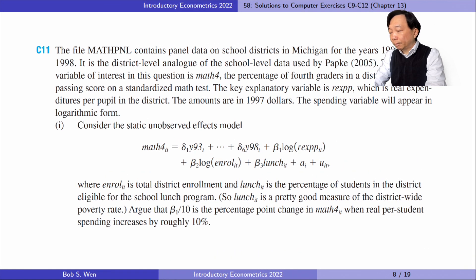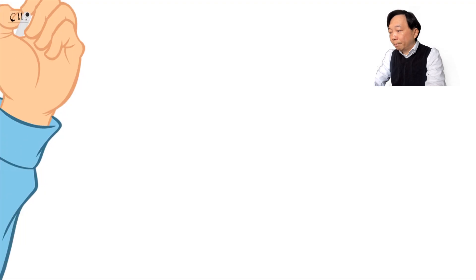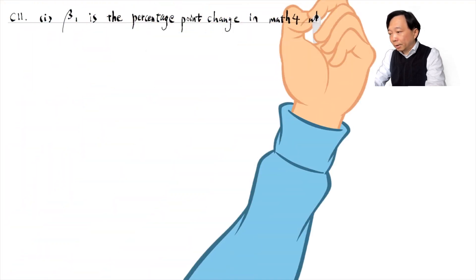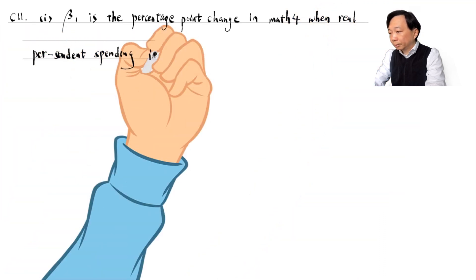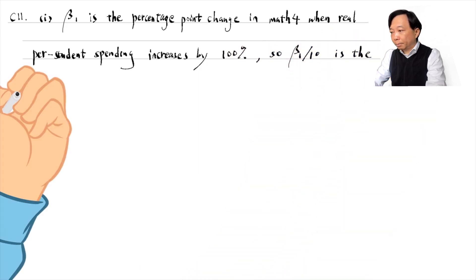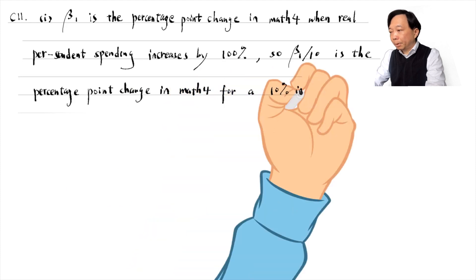Let's do computer exercise 11. In part 1, we consider the static unobserved effects model and argue that beta 1 over 10 is the percentage point change in math 4 when per student spending increases by roughly 10%. The outcome variable is the percentage of students receiving a passing score on the math test. The explanatory variable is in logarithmic form, so beta 1 is the percentage point change in math 4 for a 10% increase in spending. Equivalently, beta 1 over 10 is the percentage point change in math 4 for a 10% increase in spending.